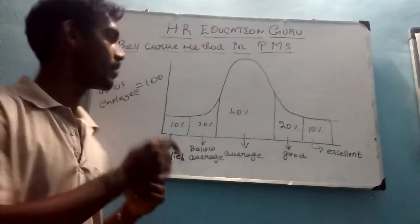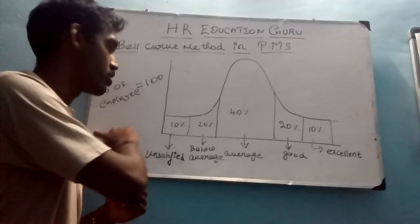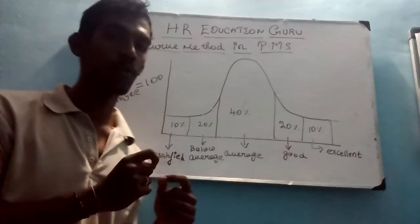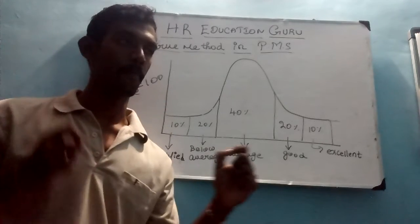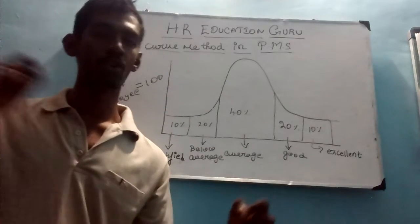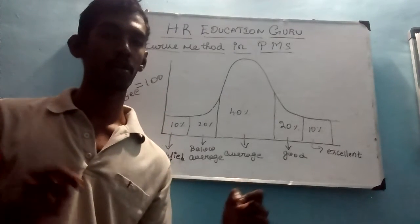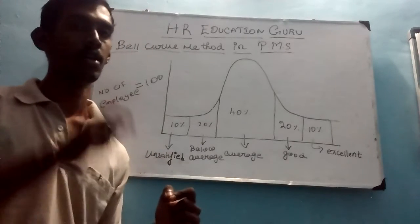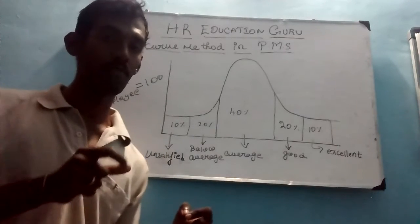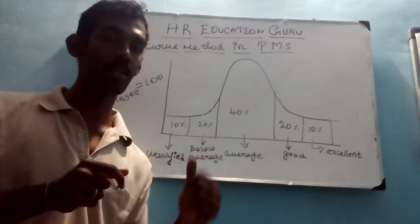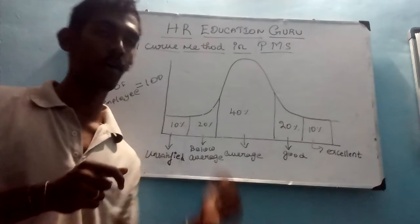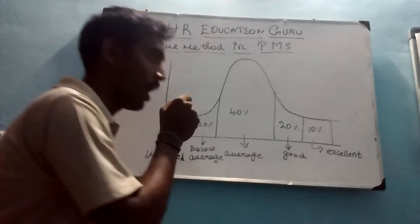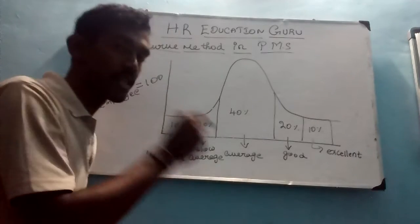Now let us assume there are 100 employees working in the organization. You have to measure the performance of all the employees using the bell curve method. In bell curve, there are some conditions that have to be followed. I am going to explain what those conditions are.